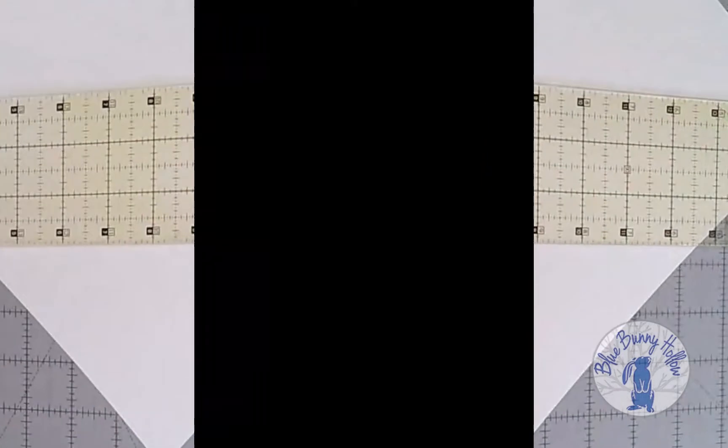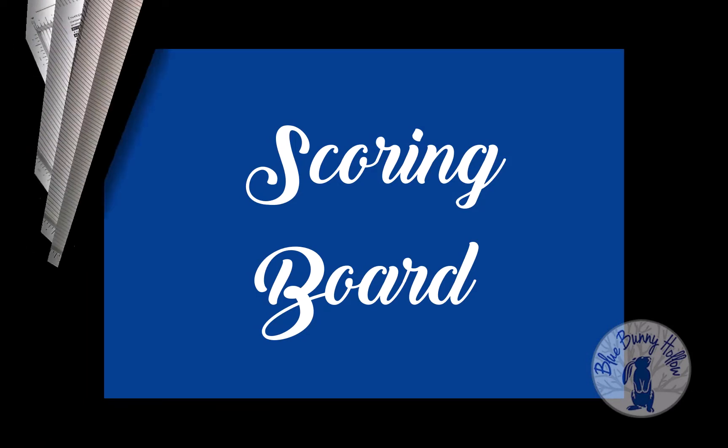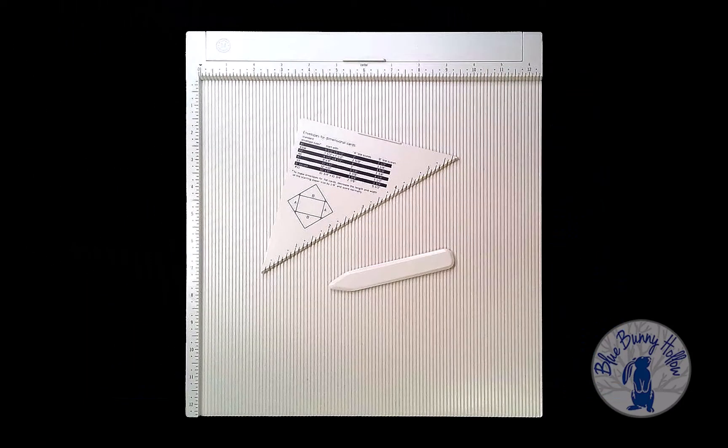Another way to score the paper for the corners is to use a scoring board. There are several brands on the market. The one I purchased a while ago was Martha Stewart's. It comes with an envelope guide and a bone folder.